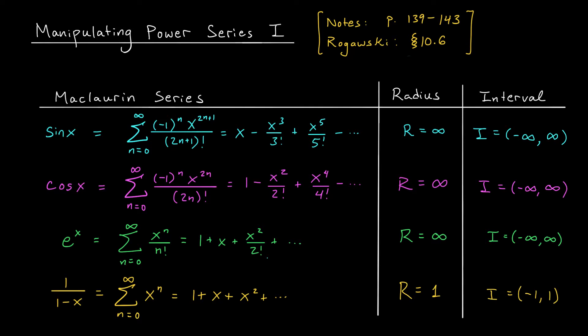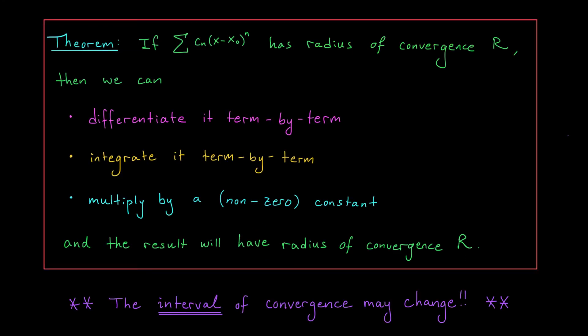Now, if you want the Taylor series for a different function, you could start from scratch — find its derivatives, find the Taylor polynomials, build up the Taylor series, and then test convergence using the ratio test. But that's a lot of work. Instead, we can use what we already know about these four famous functions. In practice, a lot of the functions we work with can be obtained from these four using derivatives, integrals, and addition and multiplication. By performing these same operations on our Maclaurin series, we get a Maclaurin series for our related function. Here is the big theorem that tells us how the radius of convergence is affected by differentiation and integration. Spoiler alert: it's not affected at all, which is really remarkable.